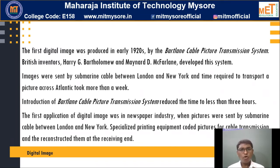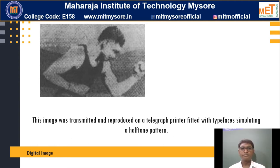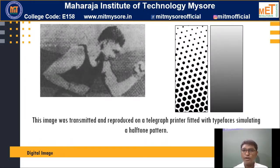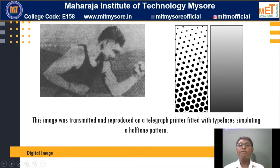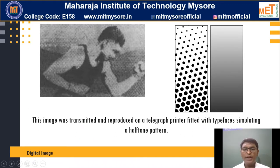The first historical image that was transmitted was reproduced on a telegraphic printer fitted with typefaces simulating a halftone pattern. You are able to see a set of dots on the left side of an image, and the gradient of the image is put on the right side. This system was used at the receiving end for reproduction of the same image. These dots are of varying intensities — some are very small in intensity and some are very high. When you take a gradient of these intensified dots, you are able to see the image on the right side.